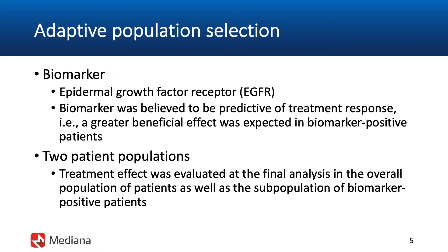At the same time, we need to keep in mind that it is possible the selected biomarker was not that strong from a predictive perspective, and all patients enrolled could equally benefit from the experimental treatment. In this case, a statistically significant effect would be established in the overall population. The multi-population design was introduced to help the sponsor account for those two options.